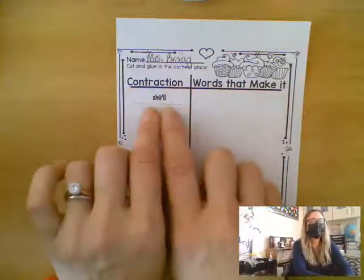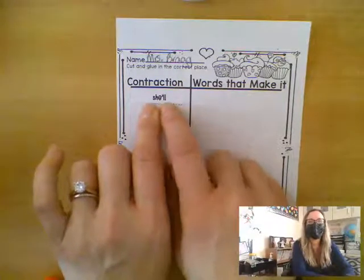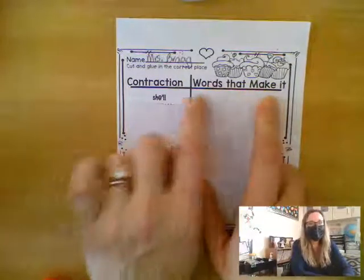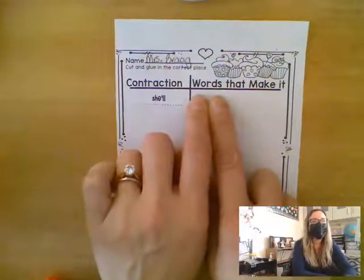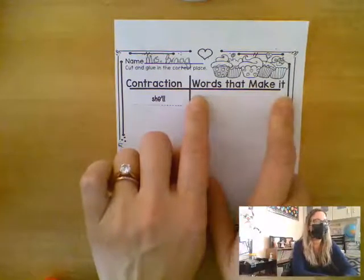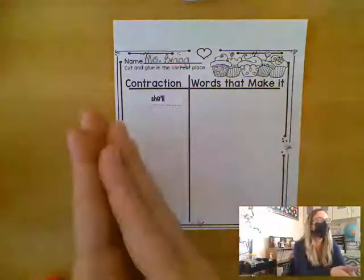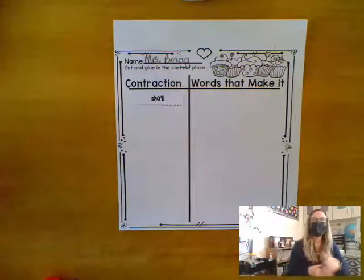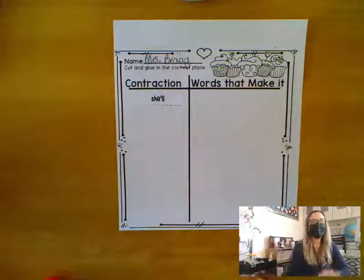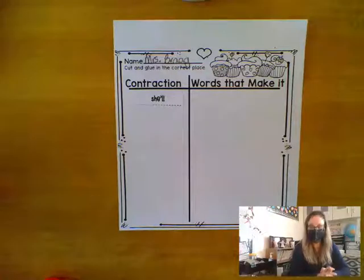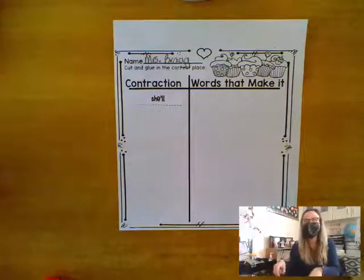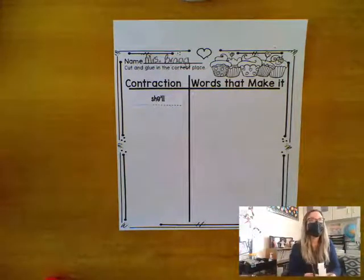This contraction is she'll. Now on this side it says 'words that make it.' So there are two words that we squish together to make she'll. When I say she'll be here at five o'clock, what two words am I saying? I'm saying she, right? And what else? Will.